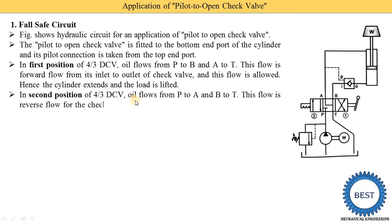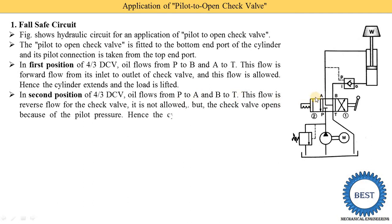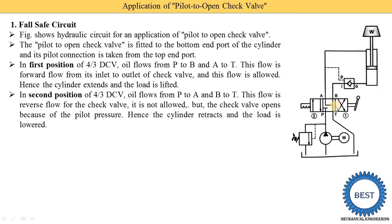In the second position of the 4/3 DCV, oil flows from P to A and B to T. The P port is connected to A, oil goes to the top end part, applies pressure on the piston, and the piston starts to move downward. This is reverse flow for the check valve and is normally not allowed. However, the check valve opens because of the pilot pressure — the pressure in the top end line is higher, so this opens the check valve. When the check valve opens, pressurized oil flows from the bottom end part to port B. Hence the cylinder retracts and the load is lowered.